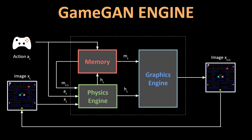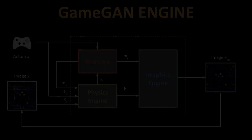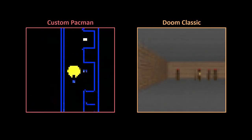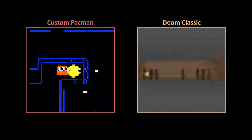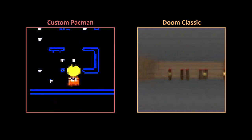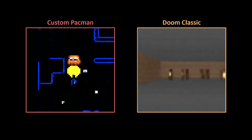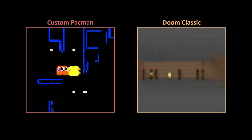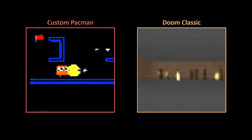Also note that this makes porting the game engine to different platforms very easy, as long as it supports the neural network framework. The authors also present their results on other environments like the classic shooter game Doom and a custom version of Pac-Man that generates new levels on its own.